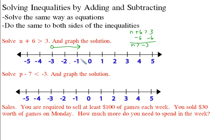One really important thing is to check your answer. Let's try 0 for n: 0 plus 6 is 6, and 6 is greater than 3 — great, that's right. Now let's plug in negative 5: negative 5 plus 6 is 1, and 1 is not greater than 3. So we've got the arrow pointing in the right direction.